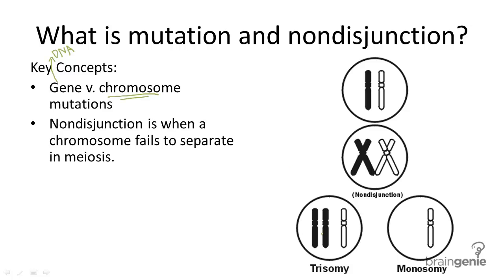If a cell ends up with an extra chromosome, we call this trisomy. You can see this is the extra chromosome — trisomy. You can remember that 'tri' refers to three, so trisomy is when there are three homologous chromosomes in a diploid organism. Another way to think about it: there's an extra chromosome added to the normal diploid count.